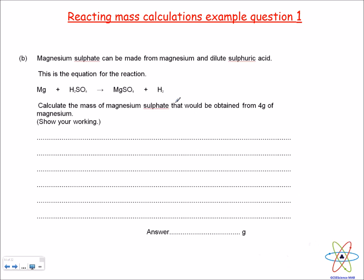We're going to start by answering this question: magnesium sulfate can be made from magnesium and dilute sulfuric acid, and then it gives you the balanced symbol equation. Calculate the mass of magnesium sulfate that would be obtained from 4 grams of magnesium. The question is only talking about magnesium and magnesium sulfate, so we can safely ignore hydrogen and sulfuric acid.